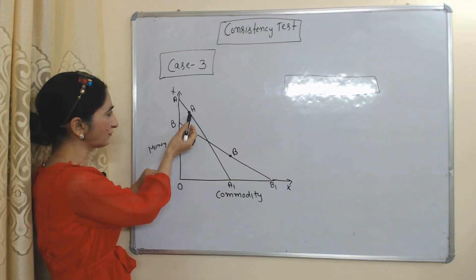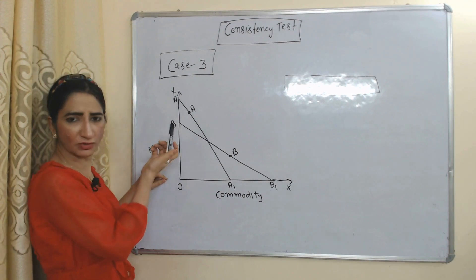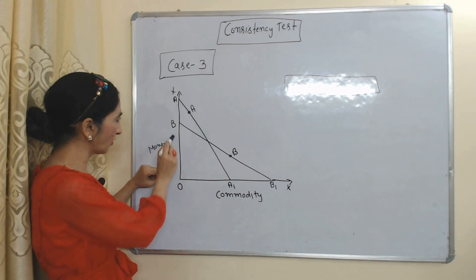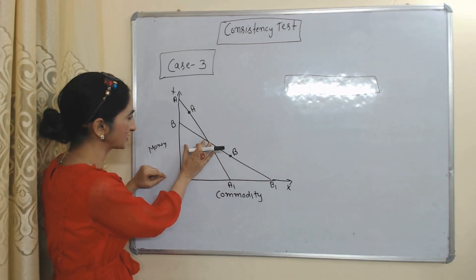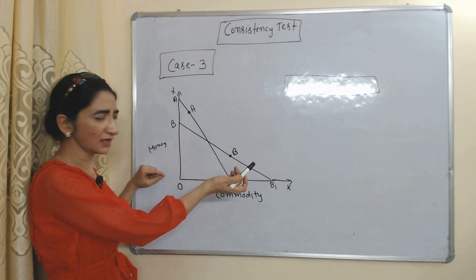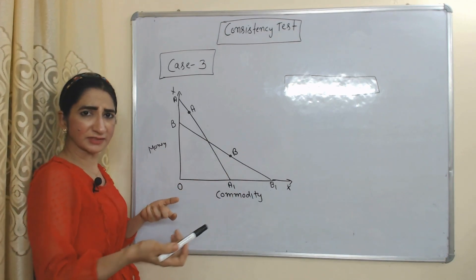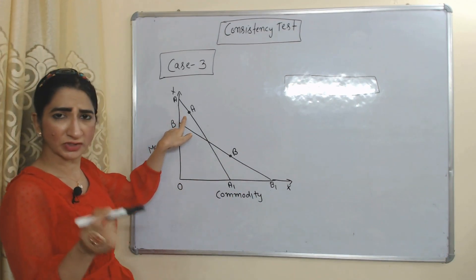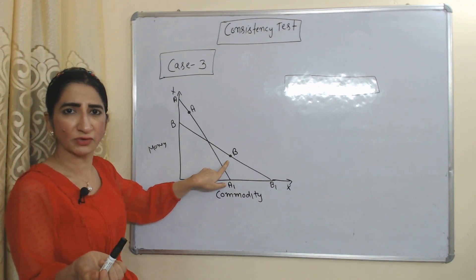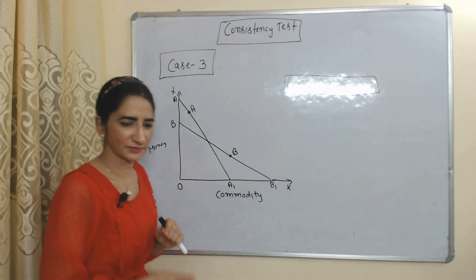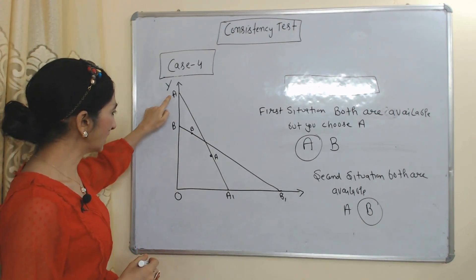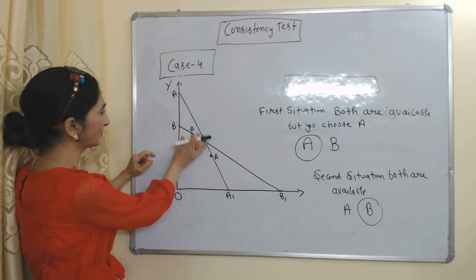In case three, triangle OA-A1 represents the first situation — here only A is available and B is not, so the consumer chooses A. Triangle OB-B1 represents the second situation — here only B is available, not A, so the consumer chooses B. This behavior is consistent because in the first situation only A was available, and in the second situation only B was available.